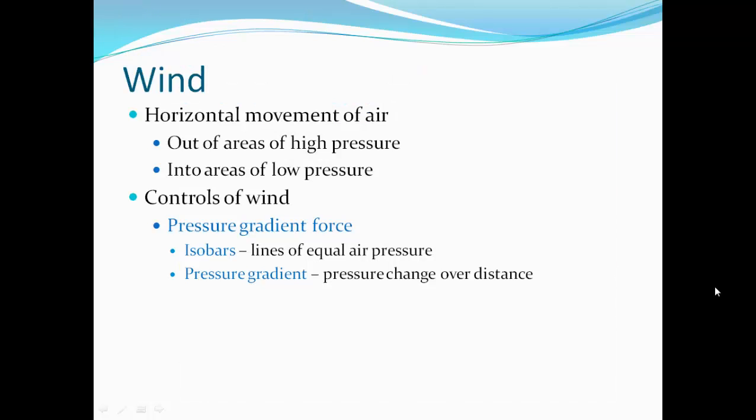Wind is the horizontal movement of air. Air moves from areas of high pressure to areas of low pressure, and that movement is wind. A control of wind is the pressure gradient force. Isobars are lines of equal air pressure — similar to how topographic maps show lines of equal elevation, isobars show lines of equal air pressure.